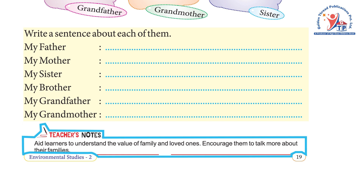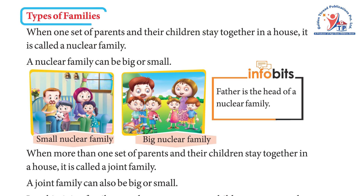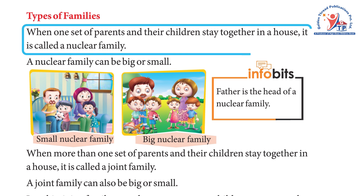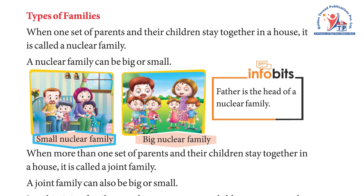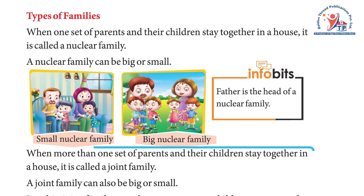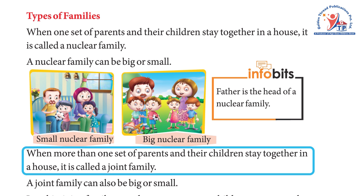Types of families: when one set of parents and their children stay together in a house, it is called a nuclear family. A nuclear family can be big or small — a small nuclear family or a big nuclear family.